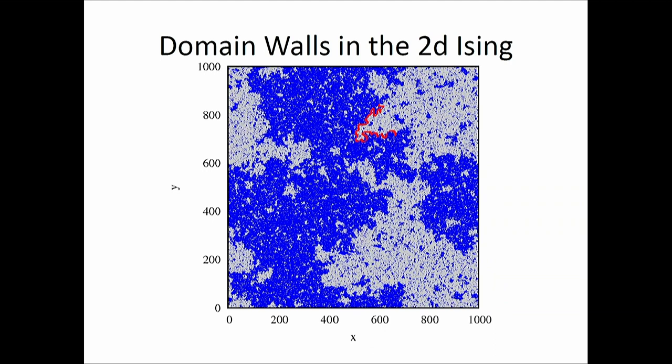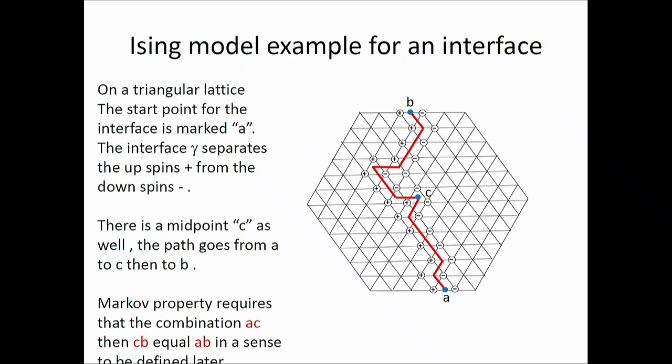These curves are what we are interested in. The proposal is that if I can analyze this curve, I have a lot of information about the critical phenomena happening here. This is a geometrical approach to critical phenomena — I study something geometrical to explain something thermal. Here is the Ising model on a triangular lattice where a path starts from A, goes to C, then to B. Spin-up is on the left side of the path and spin-down is on the right — a domain wall between the two phases.